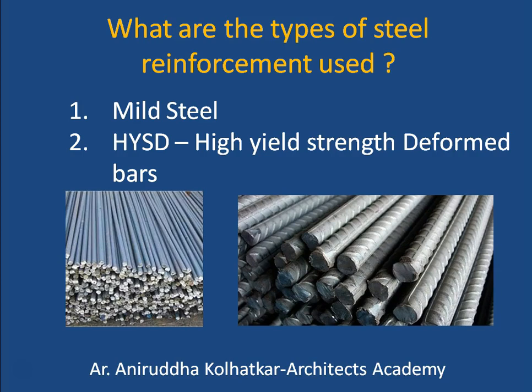Mild steel was used earlier before the development of the HYSD bar as a common material in RCC, but with the advent of HYSD bars, mild steel is no longer used as the main reinforcement in RCC. The HYSD bars have a surface that has purposefully been made rough by making ribs on it, and the strength of these HYSD bars is much greater than mild steel bars.